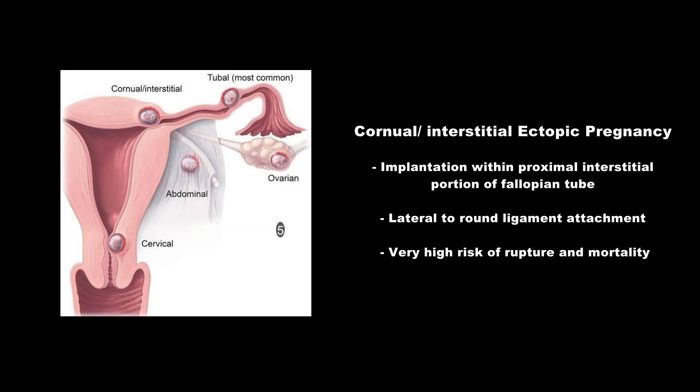Regarding corneal or interstitial ectopic pregnancy: here the blastocyst is implanted into the proximal interstitial part of the fallopian tube, with the gestational sac located lateral to the round ligament attachment. This type constitutes 2% of all ectopic pregnancies. Continuation of the pregnancy is not possible, and the mortality rate is 7 times higher due to a greater risk of rupture.